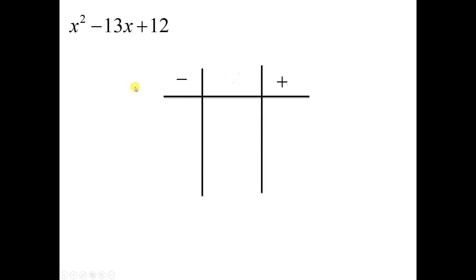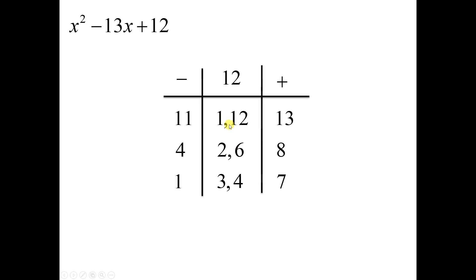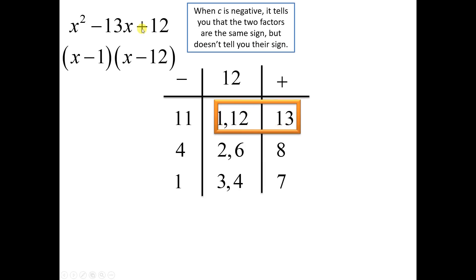Let's use the chart: x squared minus 13x plus 12. The C is 12, so it goes in the middle, we factor it, add the pairs on the left, subtract on the right. We're looking for two factors that multiply to 12 and add to 13. Since C is positive, the factors are the same sign, and since they add to a negative B, they're both negative. That's a big clue: if C is positive and B is negative, both factors are negative; if C is positive and B is positive, both factors are positive. If C is negative, one factor is positive and one is negative, and you'll have to experiment with the numbers to figure out which goes where.